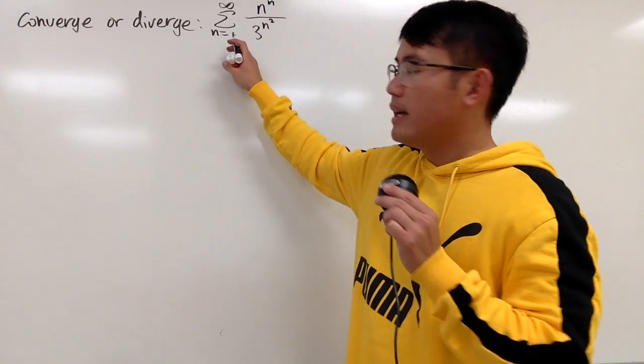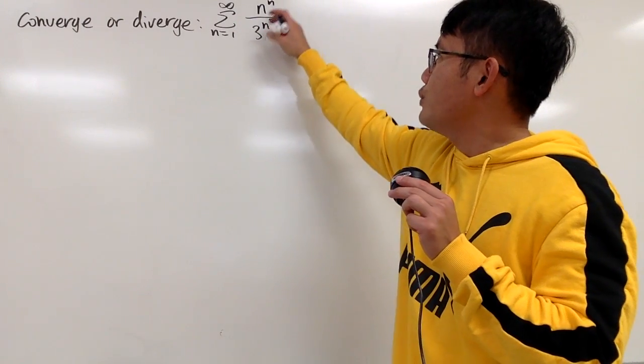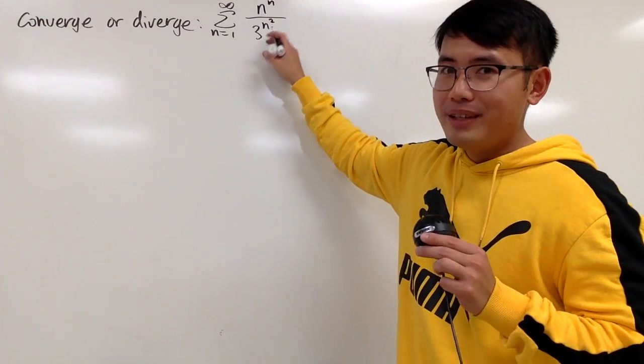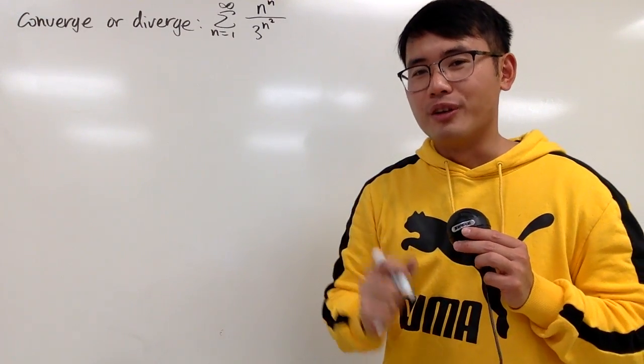Okay, we are going to find out if the series as n goes from 1 to infinity of n^n over 3^(n^2) converges or not.